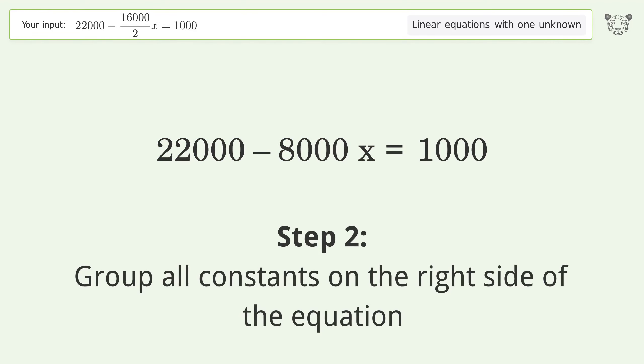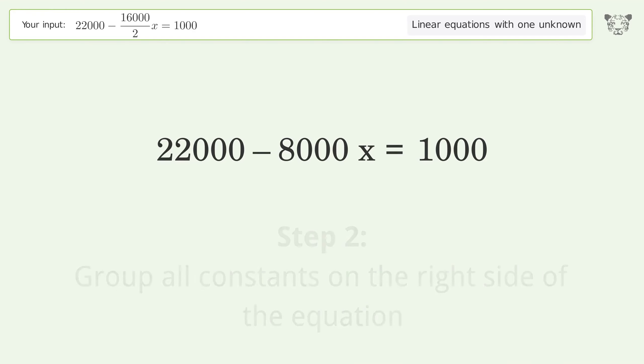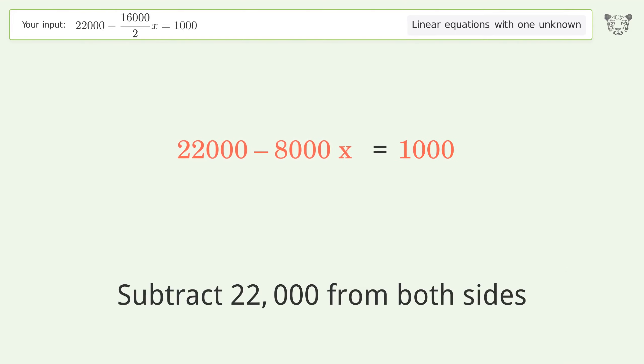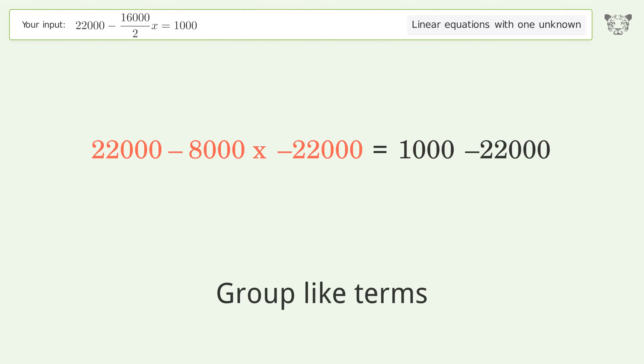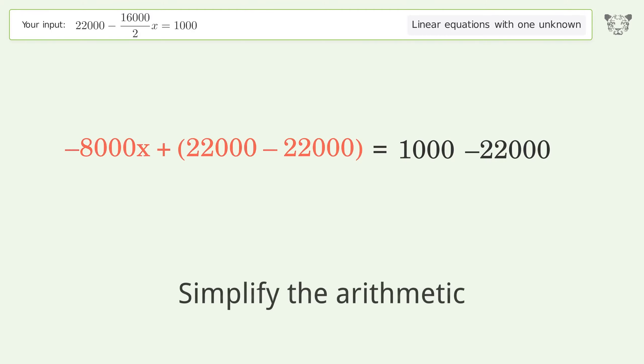Group all constants on the right side of the equation. Subtract 22,000 from both sides. Group like terms. Simplify the arithmetic.